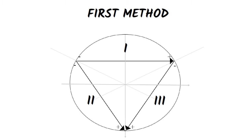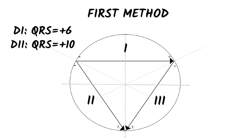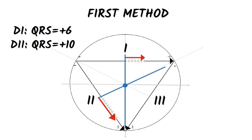In Eindhoven's triangle we represent on each chosen lead a vector that equals the amplitude of the QRS complex. We start in the middle of the lead and take into account the sign, plus or minus. We draw a perpendicular line from each point of the vector. The two perpendiculars that pass through the origin of the vector meet in point O, and the other two perpendiculars meet in point A.